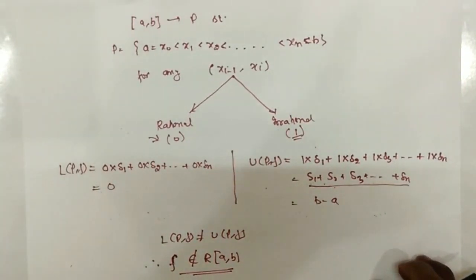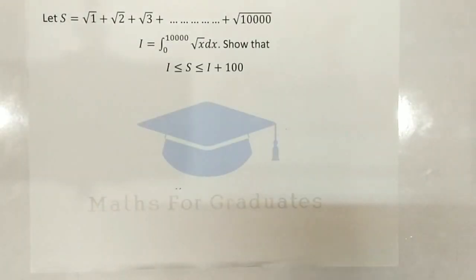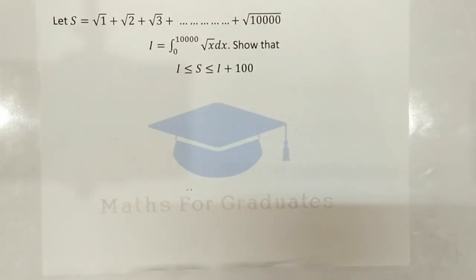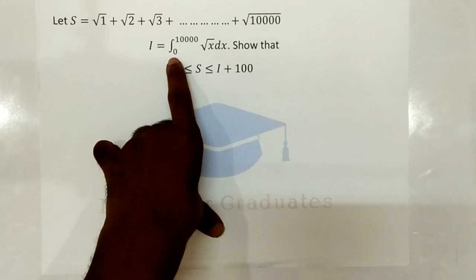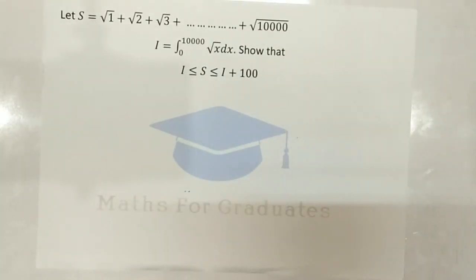Now let's see another example — a very popular problem. S is given by the sum of square roots of integers from 1 to 10,000, and the integral of the function √x is given. We have to show that I < S < I + 100.